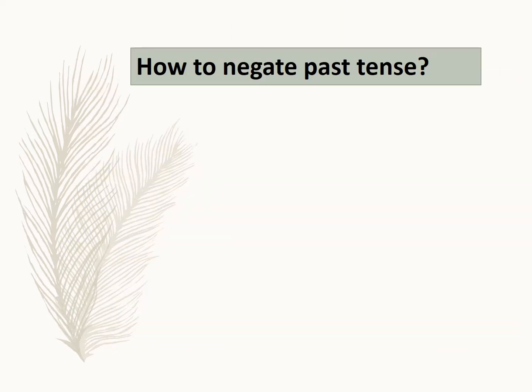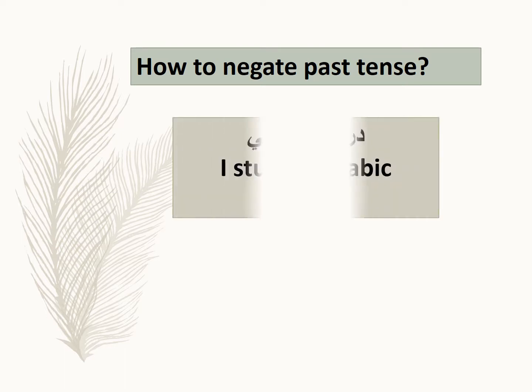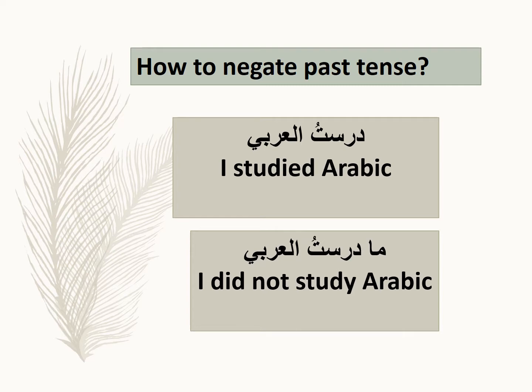Let's see how to negate past tense. Here's an example: darastu al-arabi — I studied Arabic. How do you say 'I did not study Arabic'? The way you negate is you just precede the past tense verb with the word 'ma': ma darastu al-arabi — I did not study Arabic. So you just place 'ma' before the past tense verb.